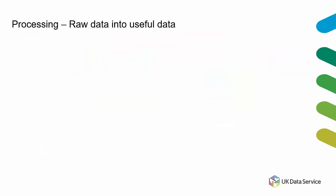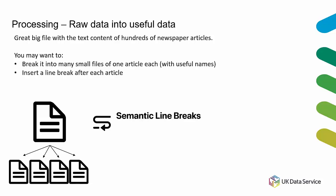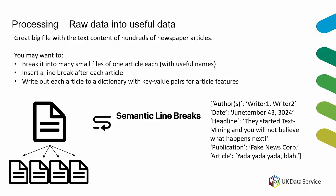The first step in processing is turning your raw data into something you can work with — that is, what you got out of the retrieval step — into something suitable for text processing. For example, if you have a large file with hundreds of newspaper articles, you might want to break it into smaller files with one article each, or insert a line break or delimiter after each article so you could import it into a spreadsheet with each article on its own row.